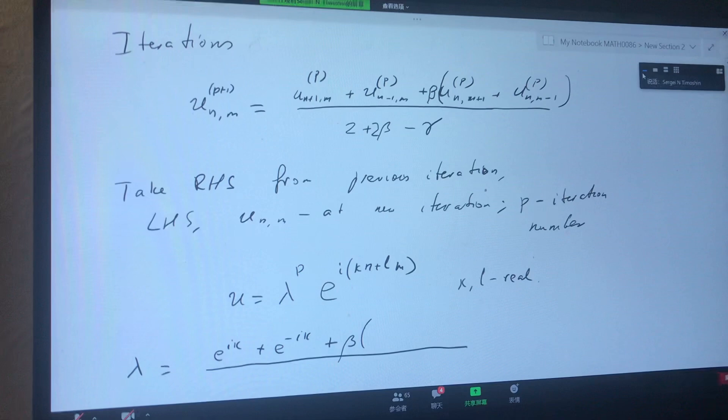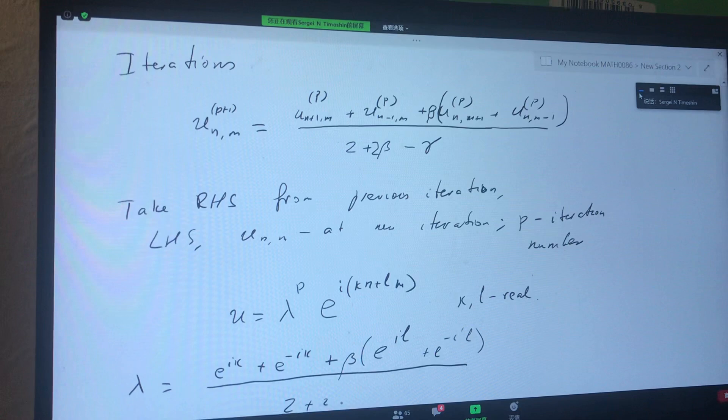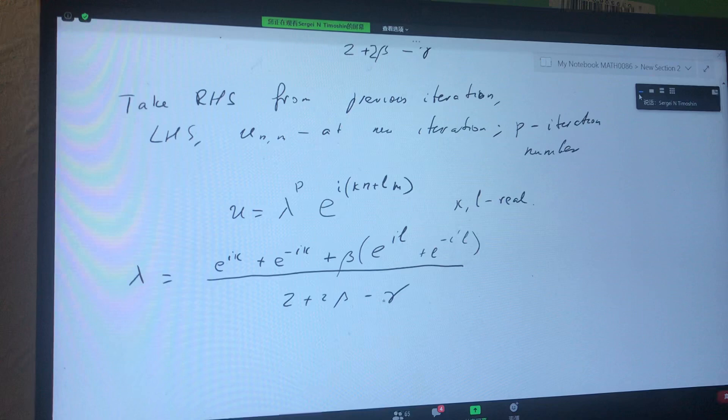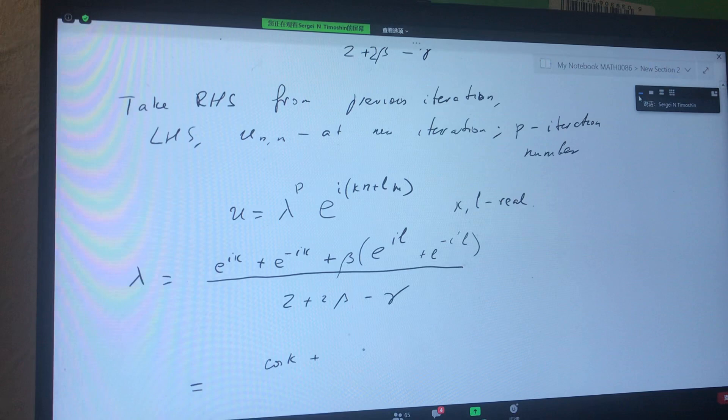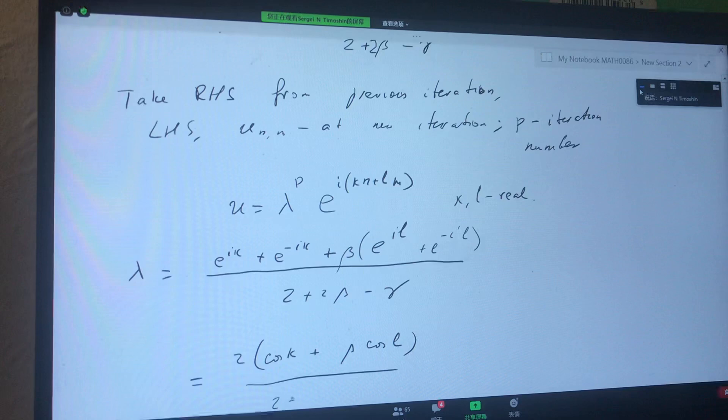This exponential goes into these terms, and this is where I'm seeing e to the iL and e to the minus iL divided by 2 plus 2 beta minus gamma. Now the complex exponentials translate straight away into cosine functions: cos(k) plus beta cos(L) multiplied by 2 divided by 2 plus 2 beta minus gamma.